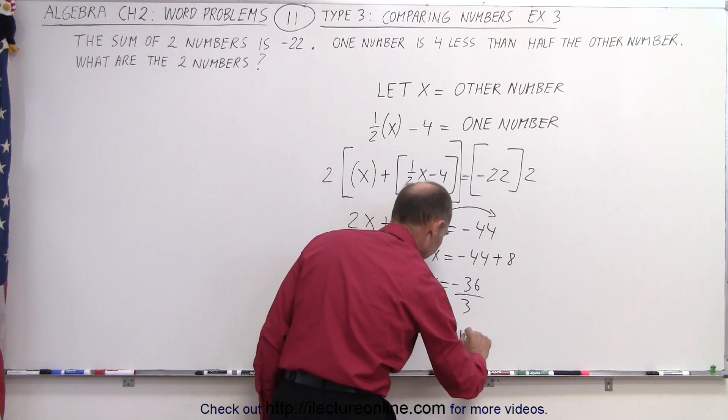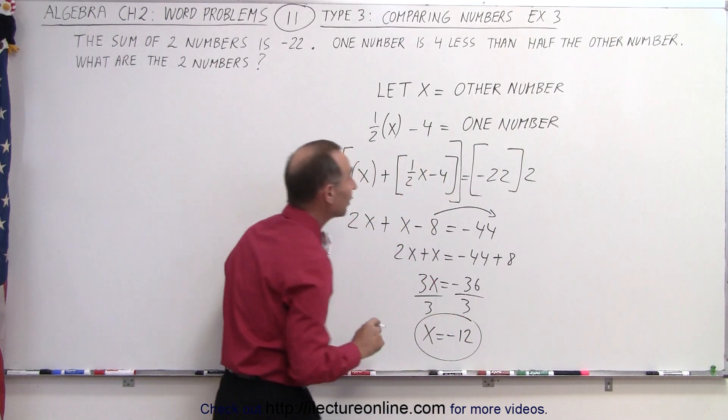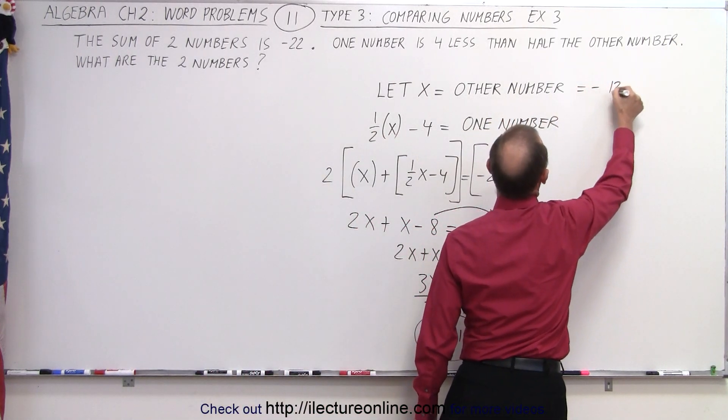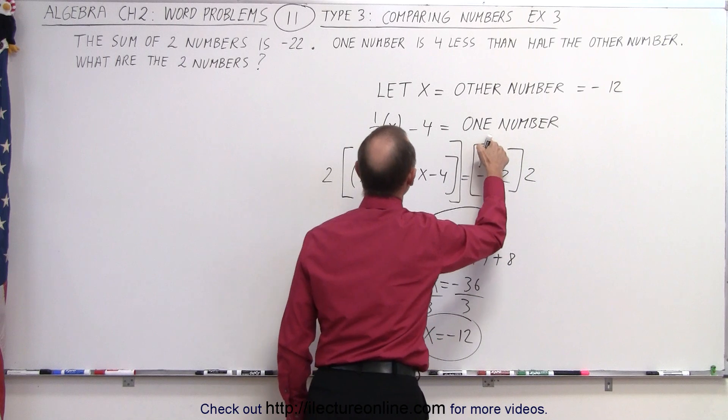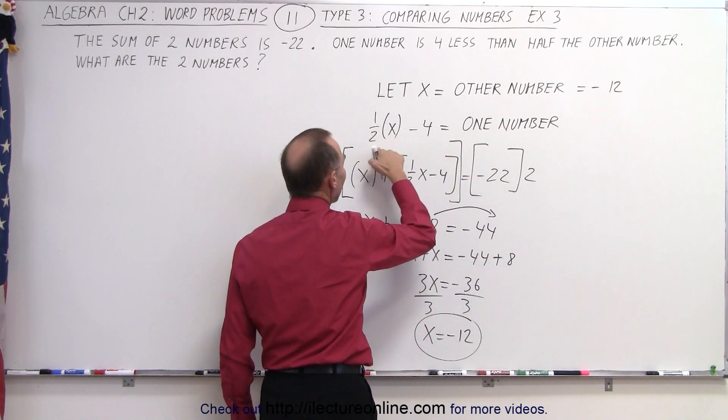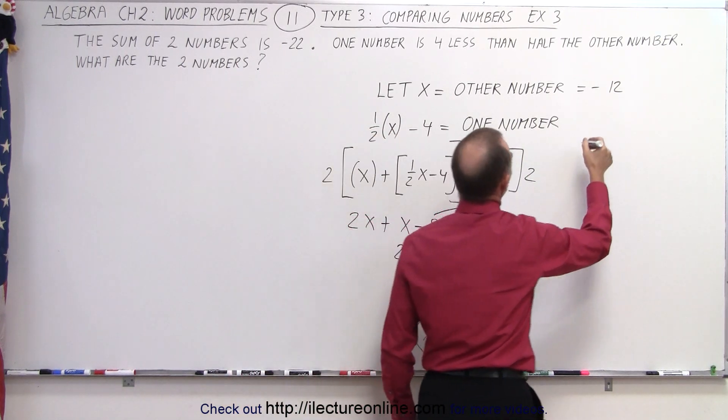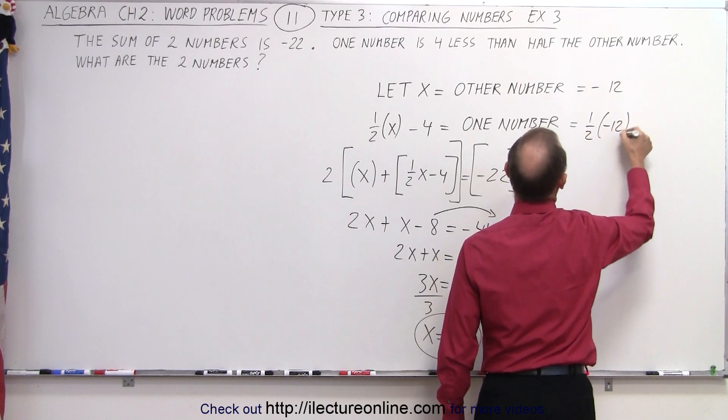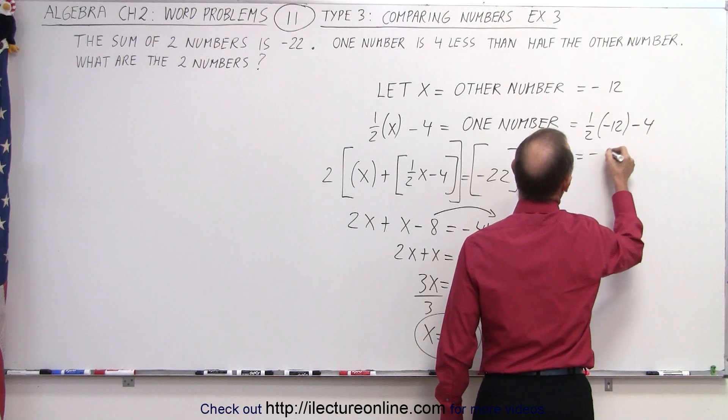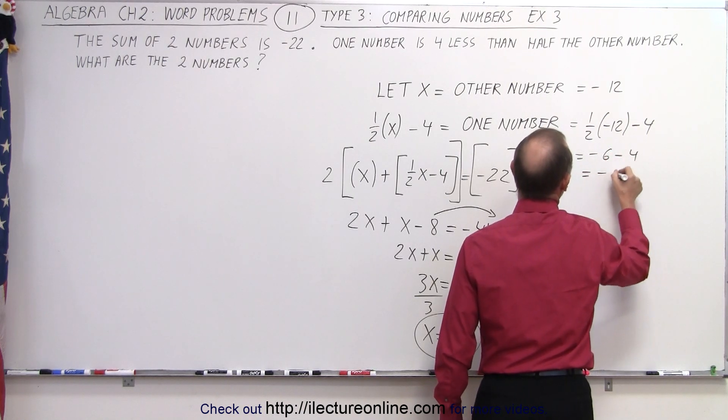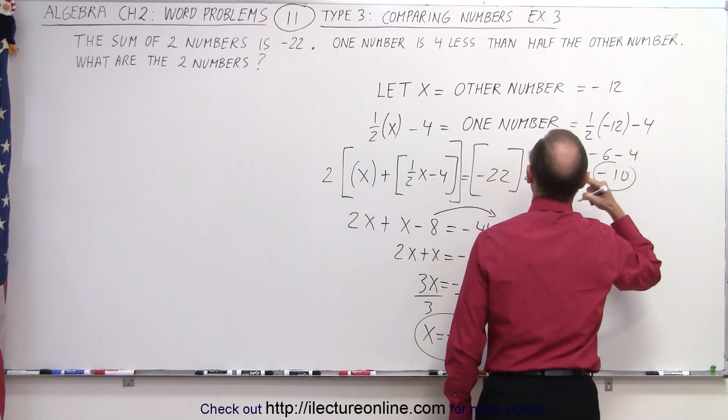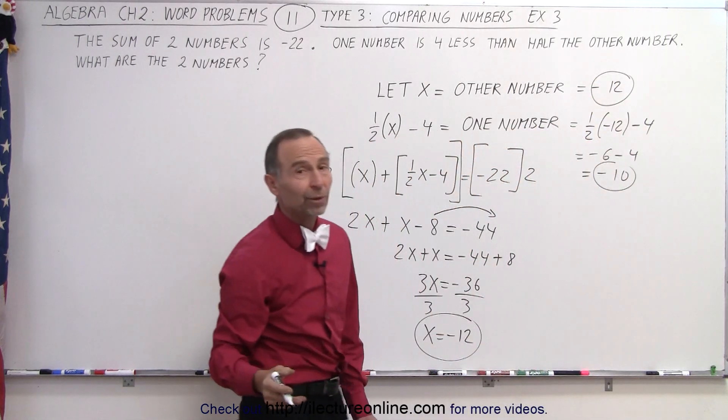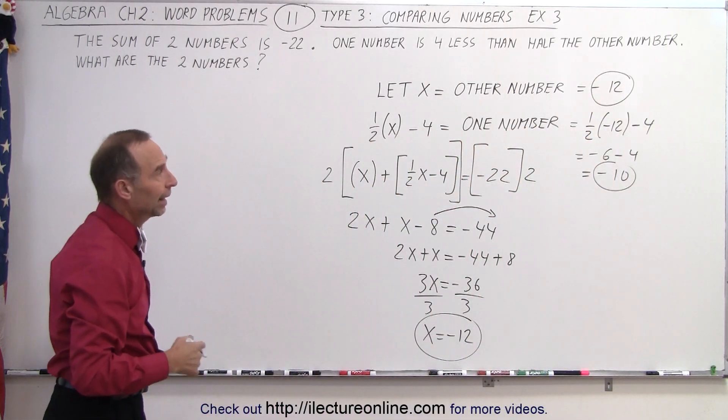Minus 12. All right. So we can say that the other number that they're referring here is equal to minus 12. That means that the one number is 4 less than half as much. So what we can do here is this is equal to 1 half times minus 12 minus 4, which is equal to minus 6 minus 4, which is equal to minus 10. So there's the one number, and there's the other number. So the two numbers we're looking for are minus 10 and minus 12.